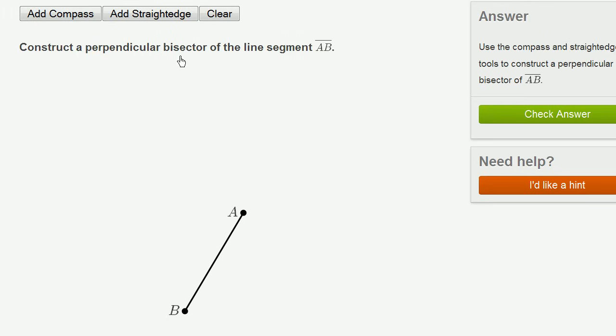We're asked to construct a perpendicular bisector of the line segment AB. The fact that it's perpendicular means that this line will make a 90 degree angle where it intersects with AB, and it's going to bisect it, so it's going to go halfway in between.